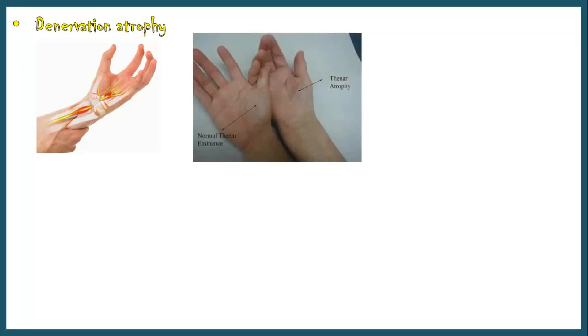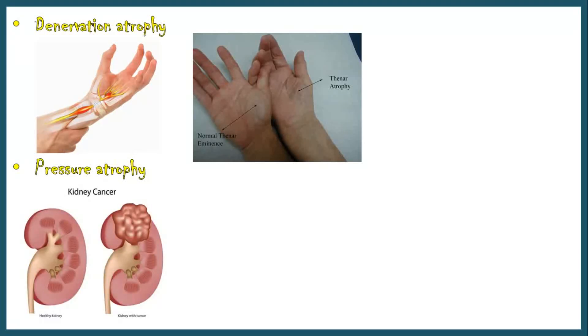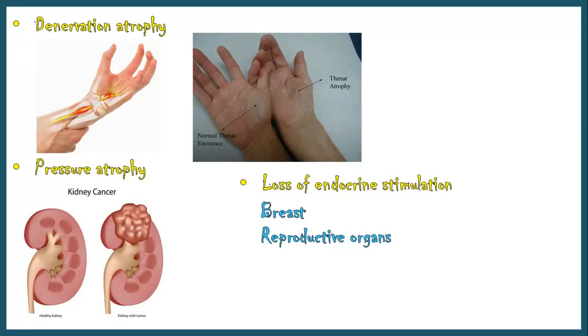The normal metabolism and function of skeletal muscle depend on its nerve supply. Damage to the nerves leads to atrophy of the muscle fibers supplied by those nerves, called denervation atrophy. In carpal tunnel syndrome, compression of the median nerve causes loss of innervation to the thenar muscles, so thenar muscles undergo atrophy. Pressure atrophy occurs when a tissue is compressed by a solid mass such as a tumor; atrophy of renal tissue in renal carcinoma is an example. Loss of endocrine stimulation also leads to atrophy of hormone-responsive organs like breast and reproductive organs.